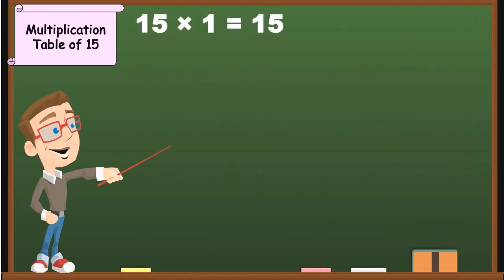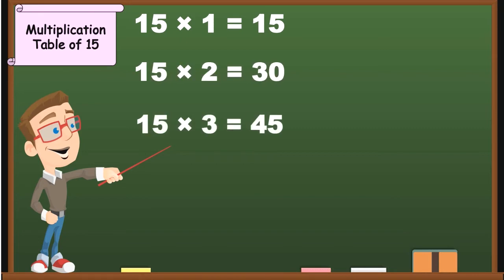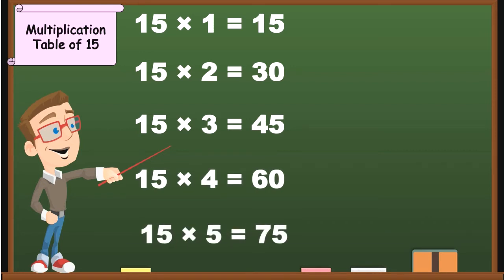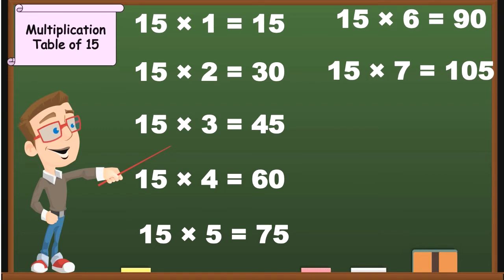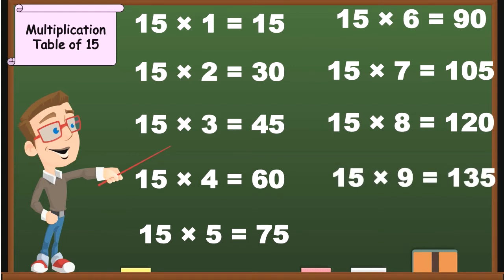15 1's are 15, 15 2's are 30, 15 3's are 45, 15 4's are 60, 15 5's are 75, 15 6's are 90, 15 7's are 105, 15 8's are 120, 15 9's are 135, 15 10's are 150.